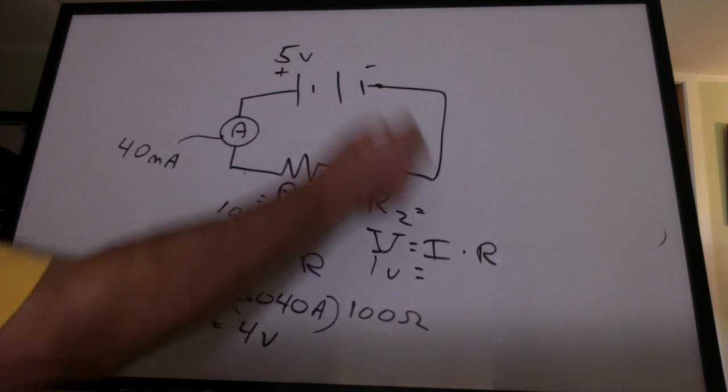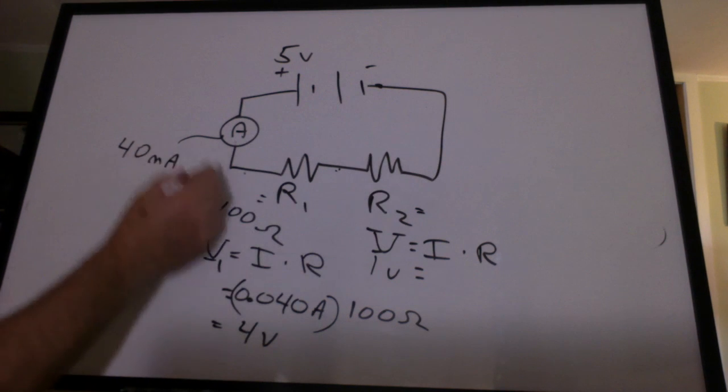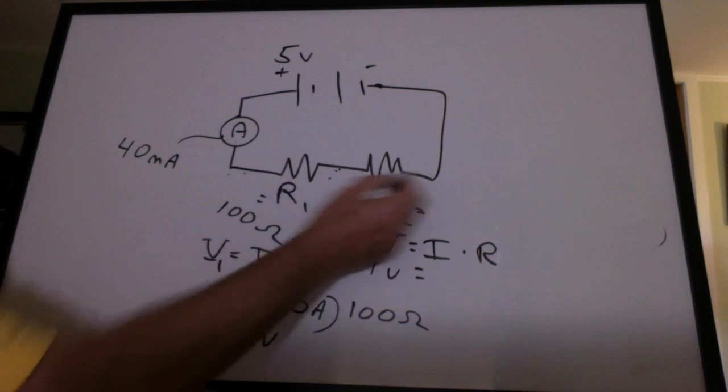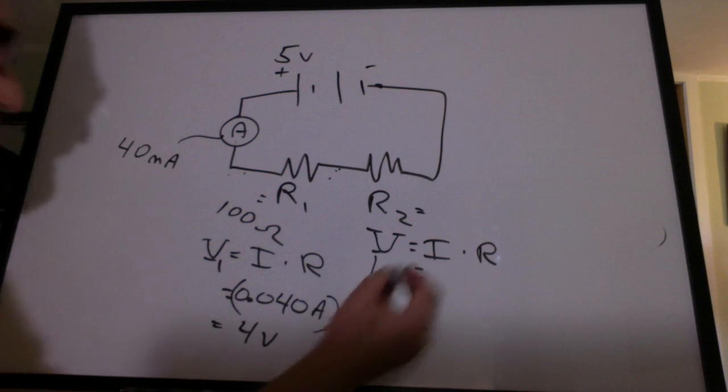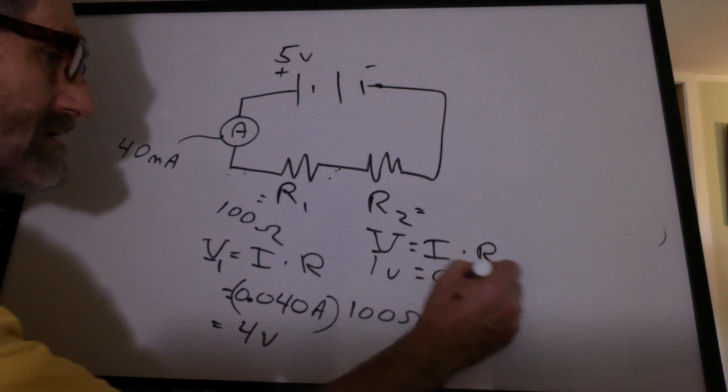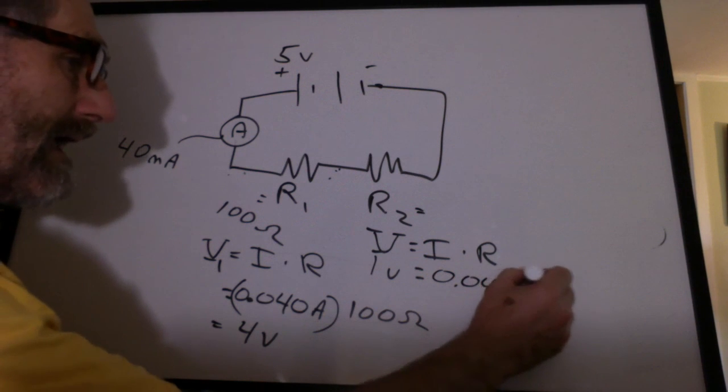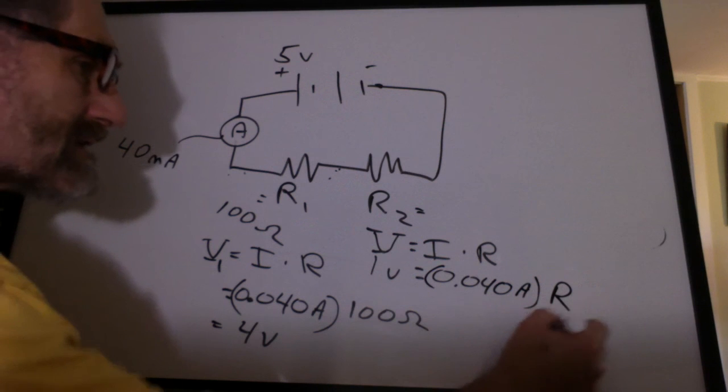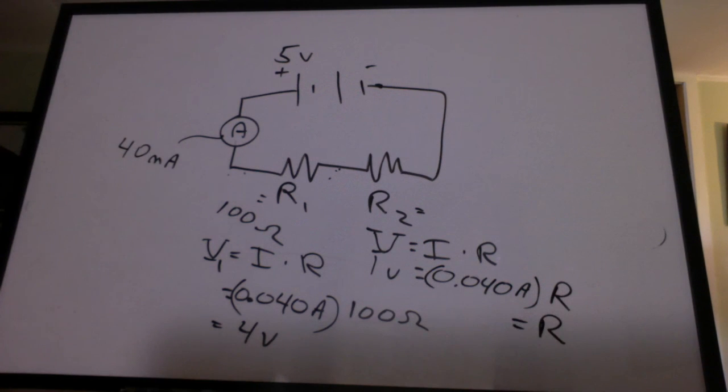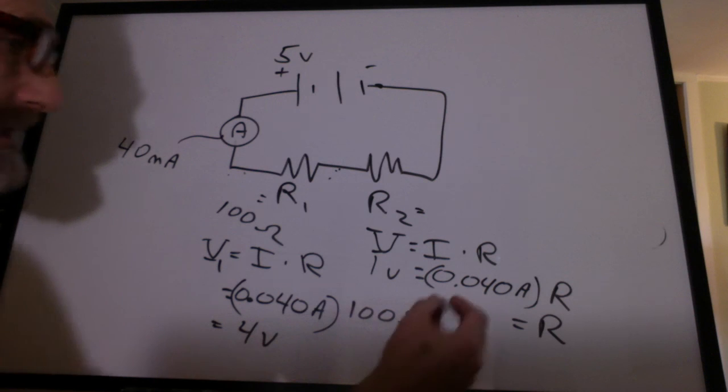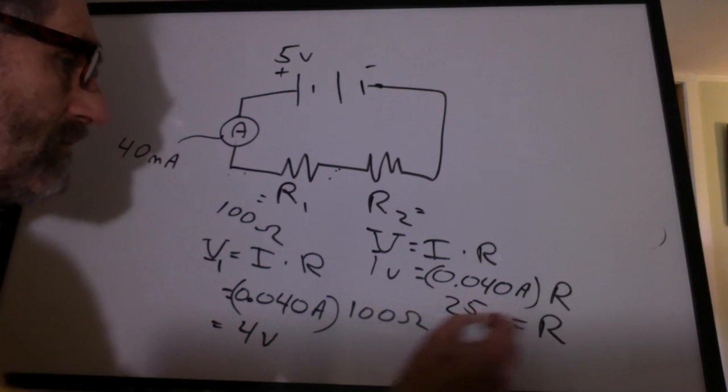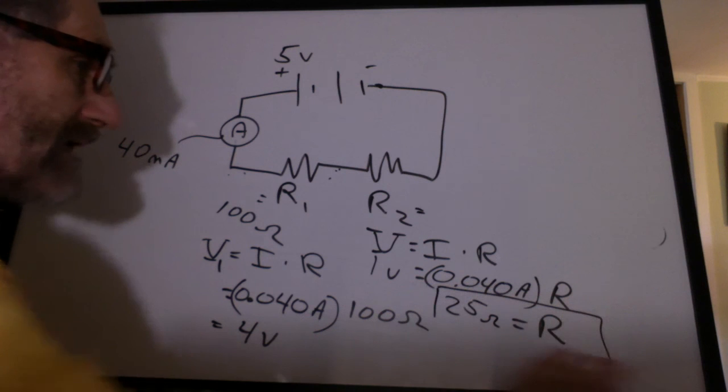How much current is flowing through this circuit? 40 milliamps. If 40 goes through here, 40 have to go through there too. There's no other place for it to go. So we're going to put in the 0.040 amps. And now we can solve for the resistance. We get 25 ohms. So that's for R2.